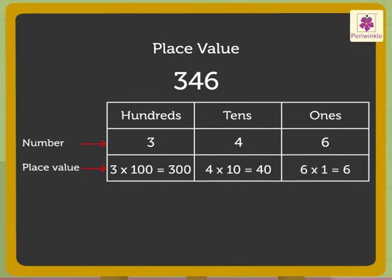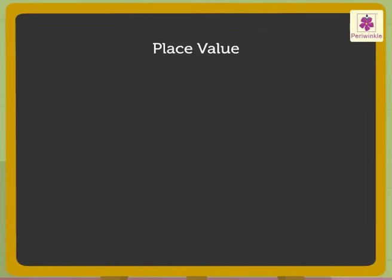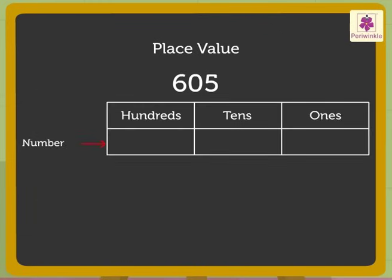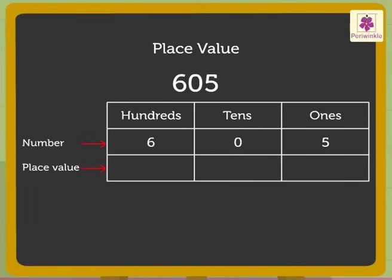Now, let us try to solve one more example. Number 605. Let us place each number in its respective column. So, number 6 goes in the hundreds column, number 0 in tens column and number 5 in the ones column. The place value of number 6 is 6 into 100. That is, 600.